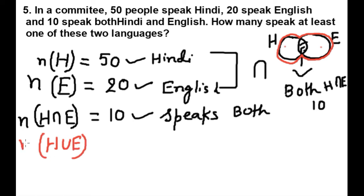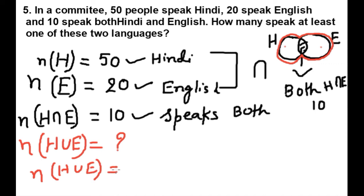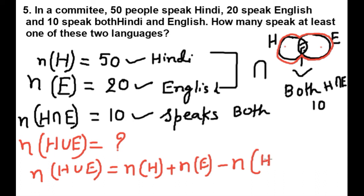We have one formula: n(H ∪ E) is equal to n(H) plus n(E) minus n(H ∩ E).